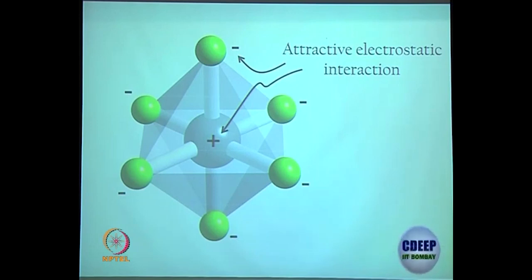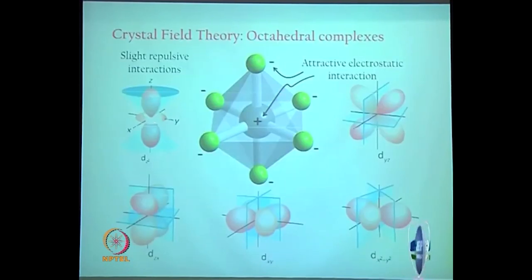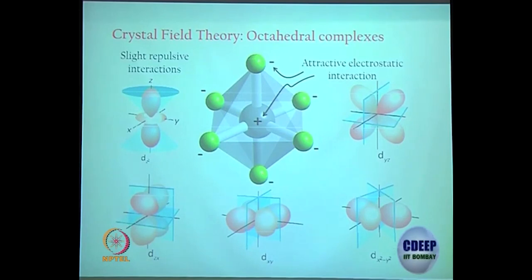All other orbitals — dxy, dyz, dxz — are not facing these ligands directly; they are in between. So they are not going to get repelled too much. Relative to dx²-y² and dz², they are going to be stabilized. A quick look at the orbitals we discussed in the last class: dz² and dx²-y² are shown, and with respect to the other three orbitals you can see where the ligands are, and thereby understand the stabilization or destabilization.